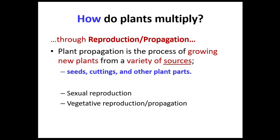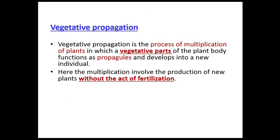In vegetative propagation, there is no involvement of sex organs — no pollen grains, no ovary. Vegetative propagation is the process of multiplication of plants in which vegetative parts of the plant body function as propagules and develop into new individuals. Seeds give rise to seedlings, which are products of sexual reproduction, but other plant parts are also capable of producing new plants — those are called propagules.